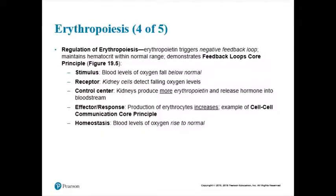Those kidney cells can't go to the bone marrow and tell it to make more red blood cells, so those receptor cells talk to the control center — which is also the kidneys — because the kidneys make erythropoietin. The kidneys come up with the plan to make erythropoietin. Then erythropoietin goes to the bone marrow to stimulate the erythrocyte colony-forming units to mature into pro-erythroblasts. Your red blood cell numbers increase, you have more carriers for oxygen, oxygen levels go back up, and the kidneys stop releasing erythropoietin.